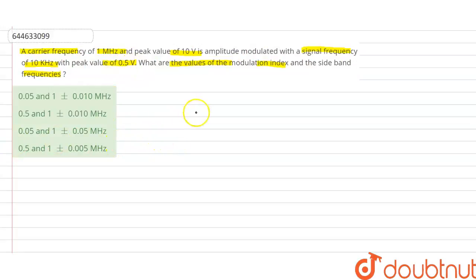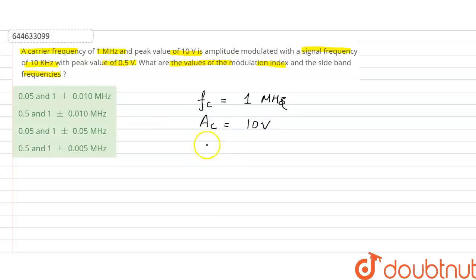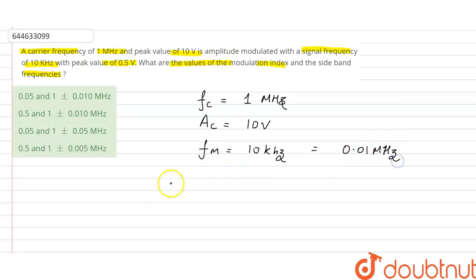So we can write: the frequency of the carrier wave is 1 megahertz. The amplitude of the carrier wave is 10 volt. The frequency of the modulation wave is 10 kilohertz, which can also be written as 0.01 megahertz. The amplitude of the modulation wave is 0.5 volt.